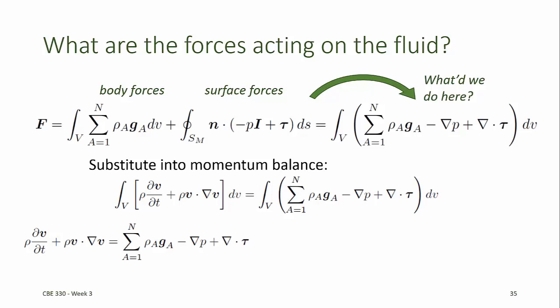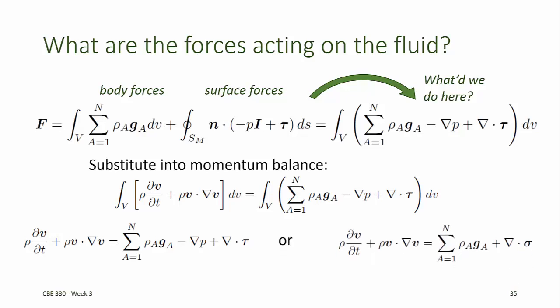Another way to write the Cauchy momentum equation is to combine the pressure and the shear stress terms to give the divergence of the total stress tensor, sigma. The equations at the bottom of slide 35 summarize the integral form and two equivalent differential forms of the Cauchy momentum equation, or the conservation of momentum. In the next video we'll derive the component balance equation for molecular species.